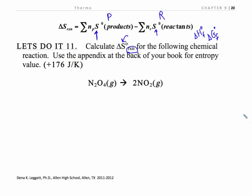We use the appendix at the back of the book and we're still dealing in products minus reactants. So if I look up the value for NO₂ I get 240 joules per kelvin and for N₂O₄ I get 304.3 joules per kelvin.